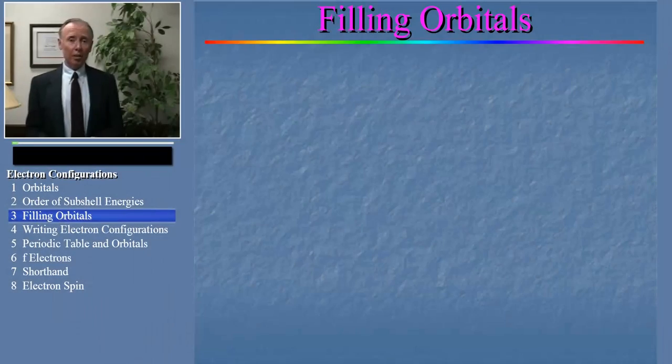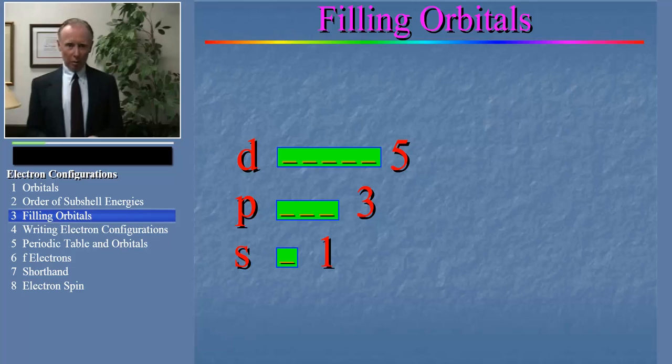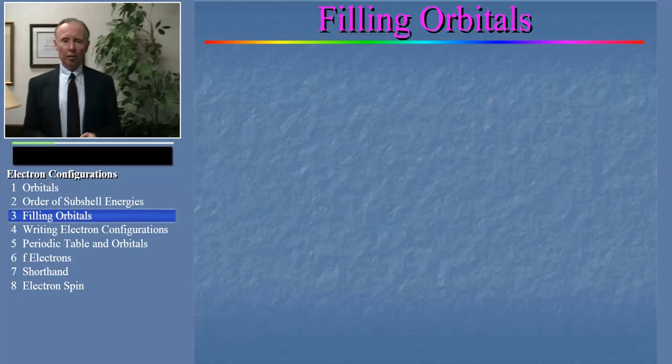Well, now, the next thing we have to remember is how many orbitals there are in each subshell. That's a really easy pattern to remember. S orbitals come in sets of 1, p orbitals come in sets of 3, and d orbitals come in sets of 5, and f orbitals come in sets of 7. See the pattern?